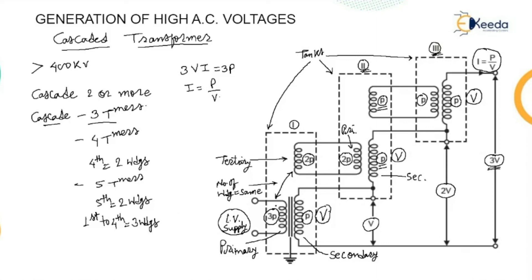This is all about the cascaded transformer for the generation of high AC voltage. The difference from a step-up potential transformer is that in a potential transformer there are only two windings — primary and secondary. In a cascaded transformer, N-1 stages must have three windings and the Nth stage should have only two windings. The power loading on lower stages becomes higher, but the current passing through each secondary winding in each stage will be the same, equal to I equal to P divided by 3. Thank you.